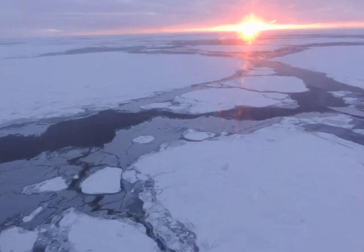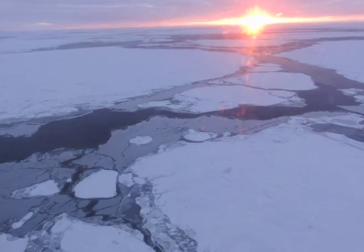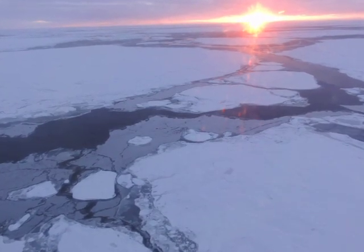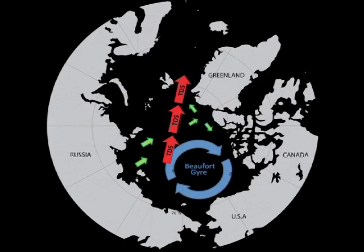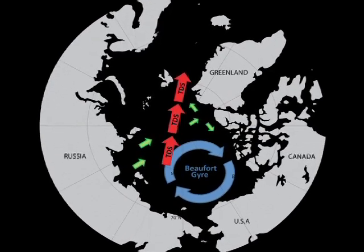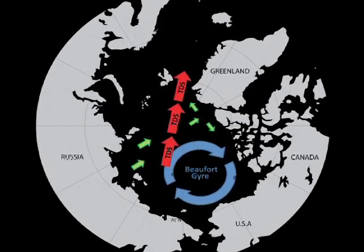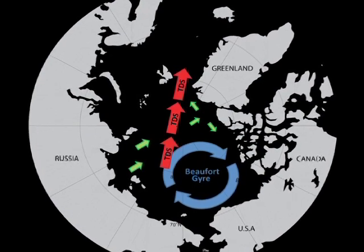The gyre traditionally recirculates old ice from the high Arctic through the southern marginal seas and into the eastern Arctic, before returning into the high Arctic, where it can either be returned in the gyre or entrained within the transpolar drift stream.